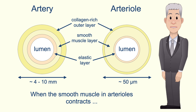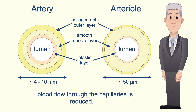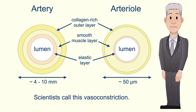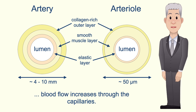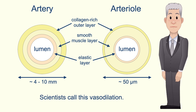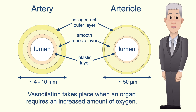When the smooth muscle in arterioles contracts, blood flow through the capillaries is reduced — scientists call this vasoconstriction. When the smooth muscle relaxes, blood flow increases through the capillaries — this is called vasodilation. Vasodilation takes place when an organ requires an increased amount of oxygen.